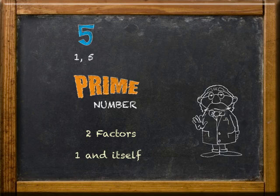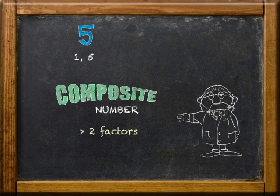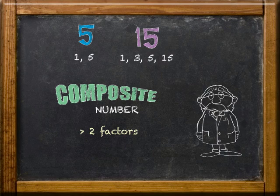1 and 5. A composite number has more than two factors. For example, the number 15 has factors of 1, 3, 5, and 15.